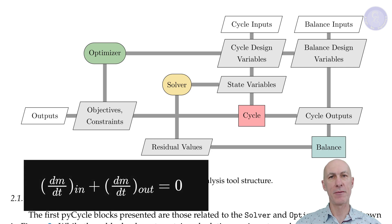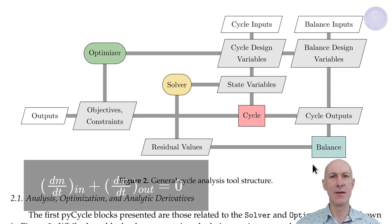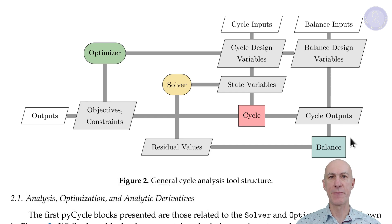For example, that the mass flow out of the intake is the same that goes into the fan. The balance block is where PyCycle enforces the engine level constraints, conservation laws, and design rules. It is in charge of ensuring that the simulated engine actually represents a physically possible and good design.